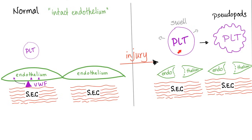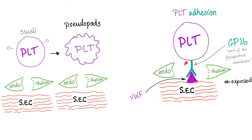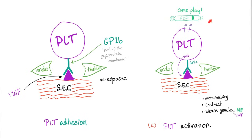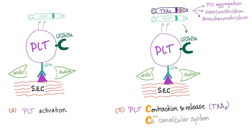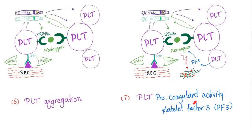When platelets notice an injury, they swell and form pseudopods. They then adhere to subendothelial collagen thanks to GP1B of the platelet and von Willebrand factor of the subendothelium. After adhesion, they activate and secrete ADP and thromboxane A2 to recruit other platelets. ADP expresses the GP2B3A receptor. After activation, there is further secretion of thromboxane A2, then platelet aggregation, and platelet procoagulant activity thanks to platelet factor 3 — not to be confused with platelet factor 4, which is involved in HIT, heparin-induced thrombocytopenia.